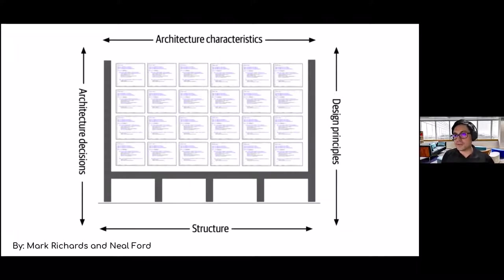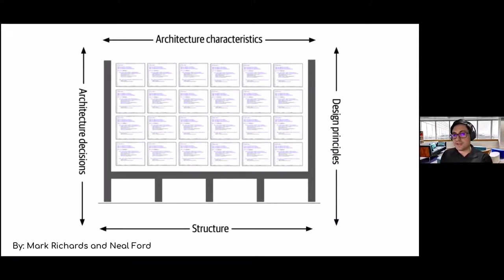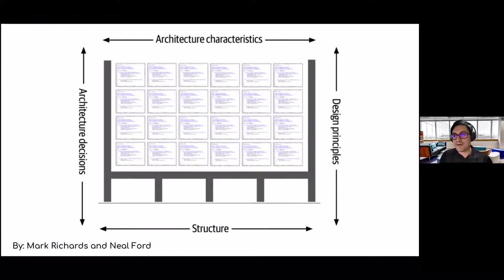Following these four principles, ideally we can define a good software architecture. But as we know, over time business requirements change, and technologies that were once good practice can become bad practice. So once you have built an architecture, how can you prevent it from gradually degrading over time?